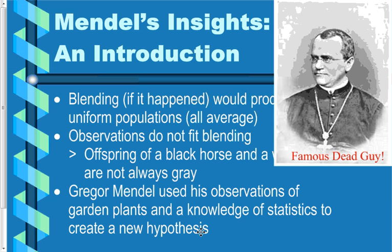Gregor Mendel lived in the 1800s in an area that at the time was Austria — it's now part of the Czech Republic. He was very good at making observations, very good at planning experiments, had a pretty good knowledge of statistics and mathematics, and he came up with a new hypothesis to explain how inheritance was taking place. His ideas are now referred to as laws.